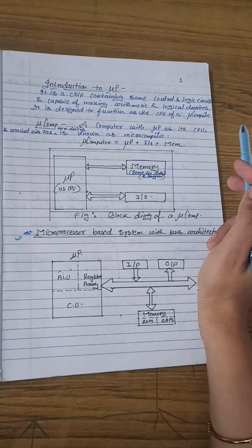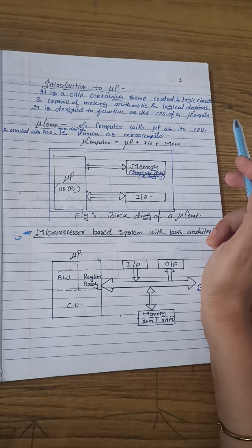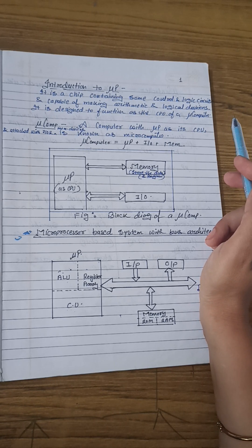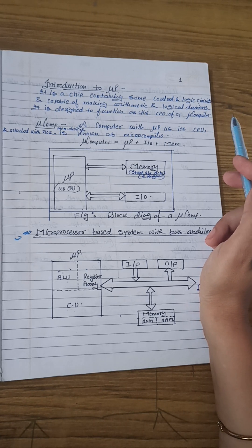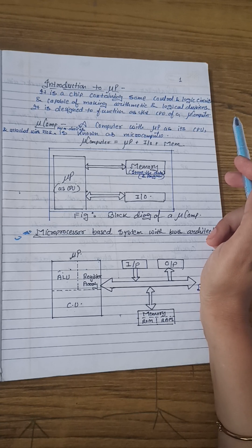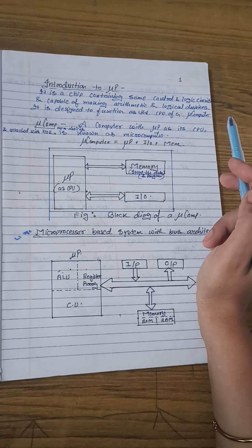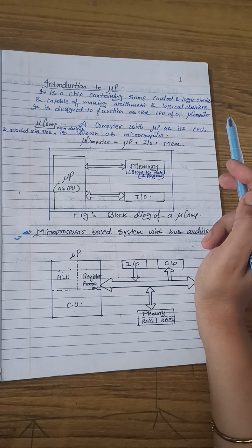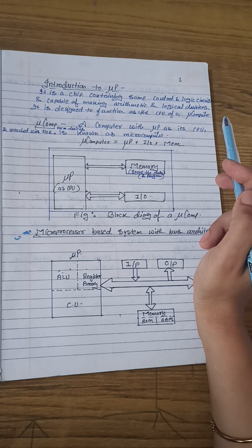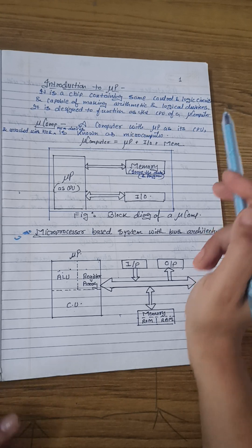Now, there are three different terms: microprocessor, microcontroller, and microcomputer. इन तीनों में बहुत ही minute सा difference है. वह difference क्या है, let us understand that.